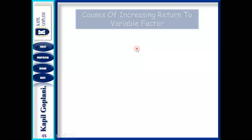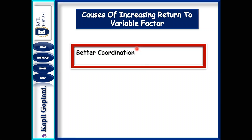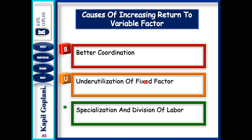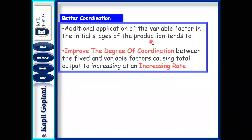Moving on to the next topic: Causes of increasing return to a factor. The first cause is better coordination. The second is under-utilization of fixed factor. The third is specialization and division of labor. Increasing return means MP is increasing — so what are the causes of that MP increase? The first cause is better coordination between the variable and fixed factor. The additional application of the variable factor in the initial stage tends to improve the degree of coordination between fixed and variable factor, causing total output to increase at an increasing rate.